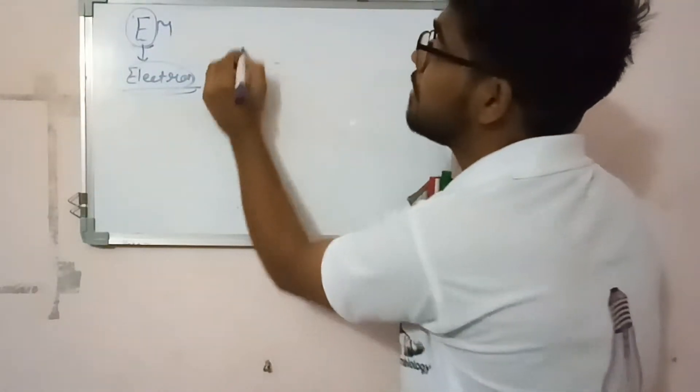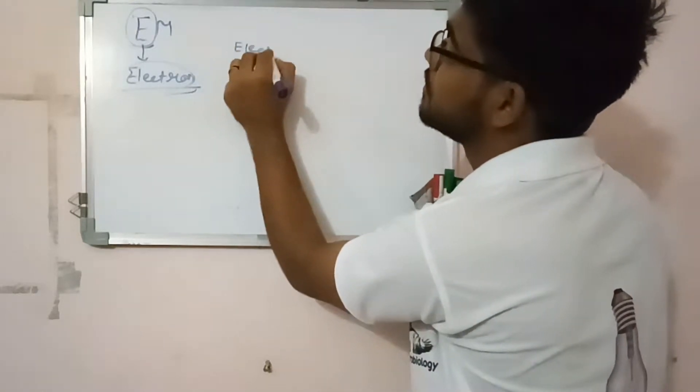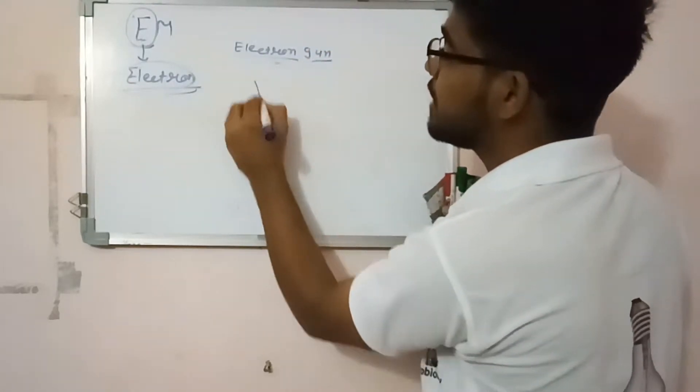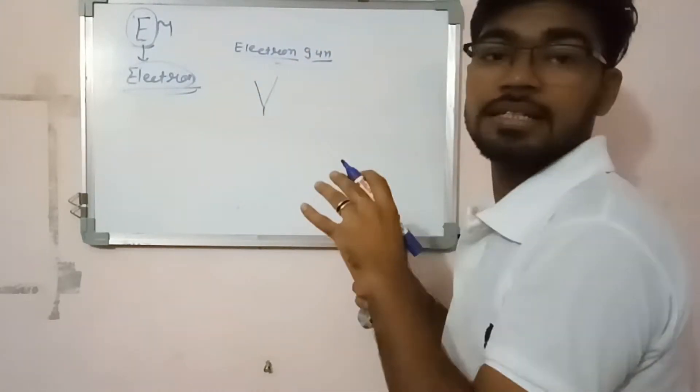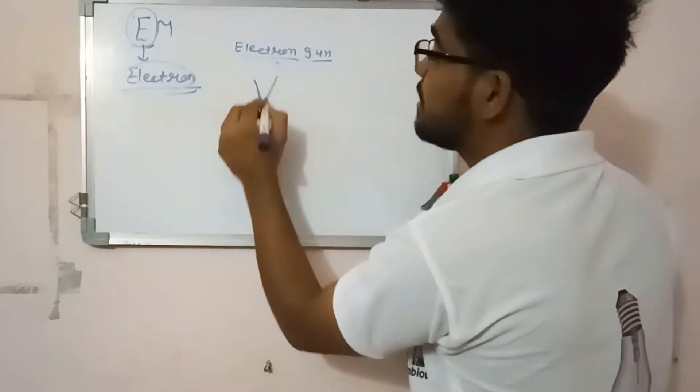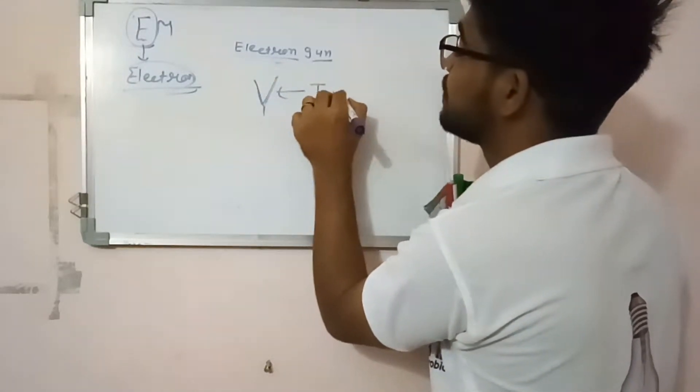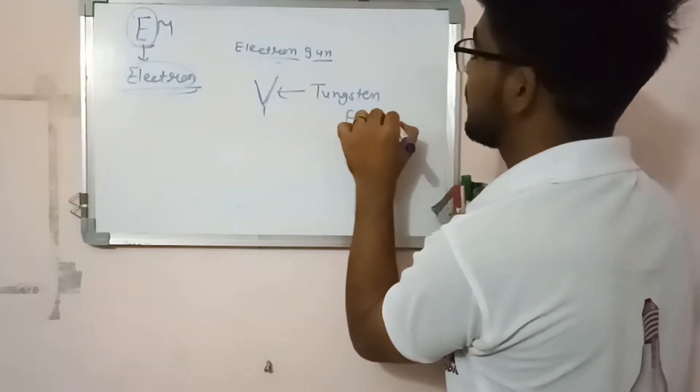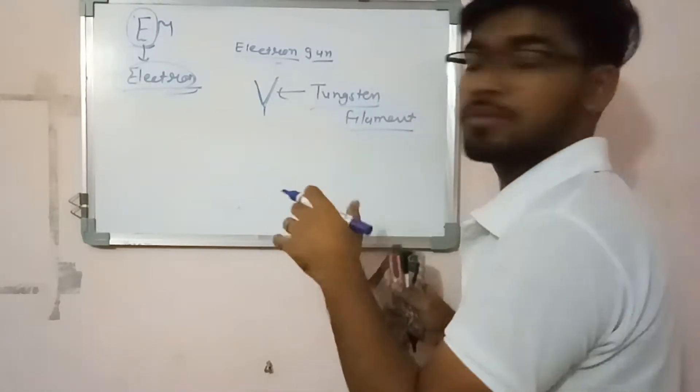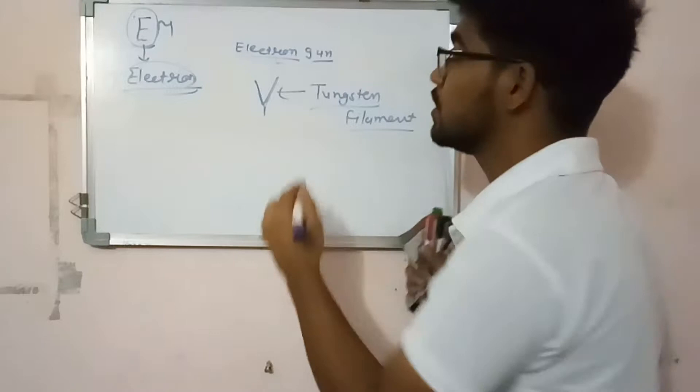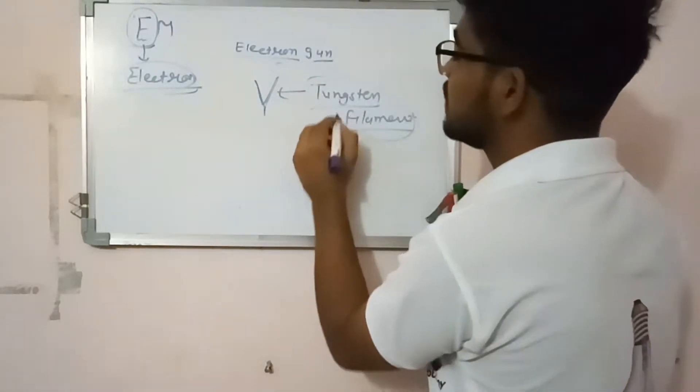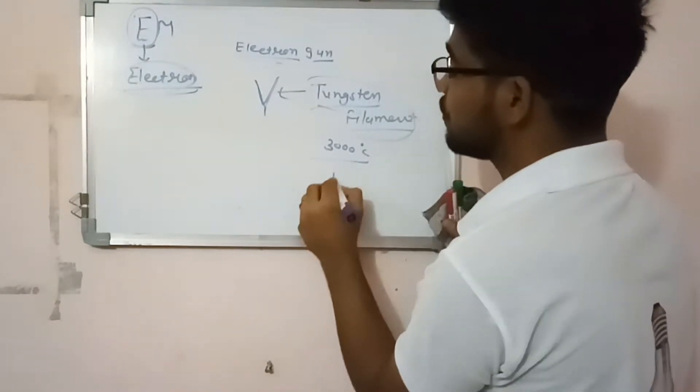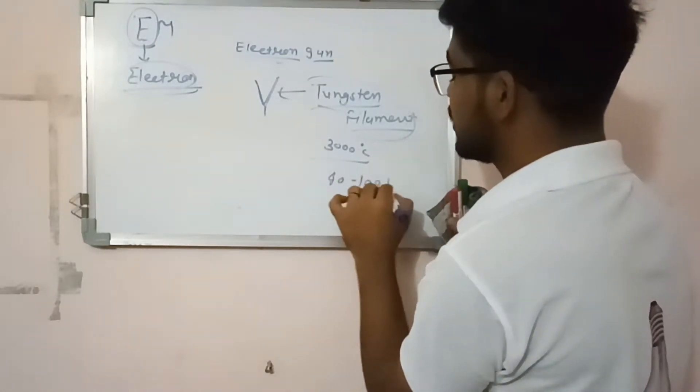The electron is generated by an electron gun. A V-shaped electron gun is made of tungsten filament. We are getting electrons from metal. The tungsten filament can withstand 3000 Celsius, so we give power of about 4200 kilowatt.